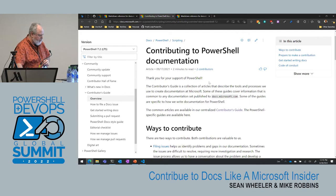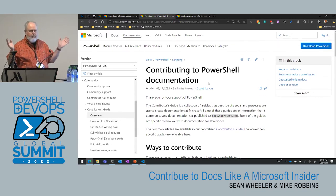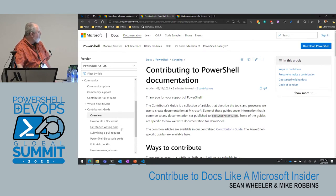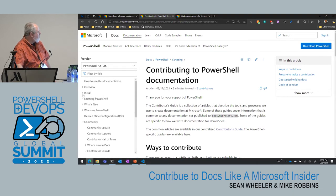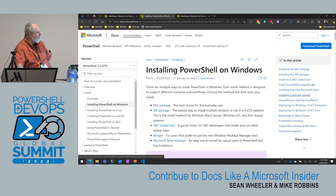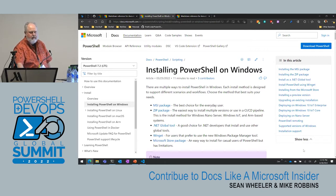Before we get into making a simple change, let's talk about the docs site itself. They recently moved some links and changed the right-hand navigation. If you go into a larger article, the table of contents is now expandable and collapsible — they're testing this out. We've had feedback that people don't necessarily like it, so feel free to give feedback to the docs platform folks.